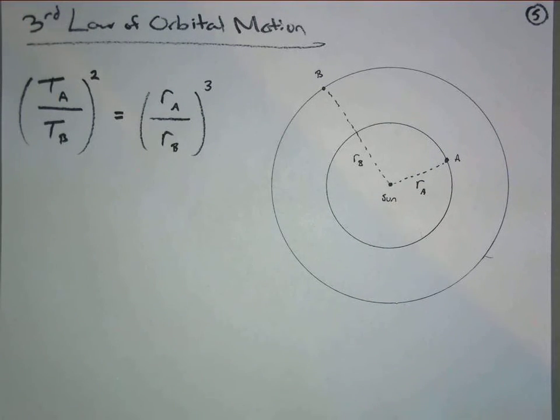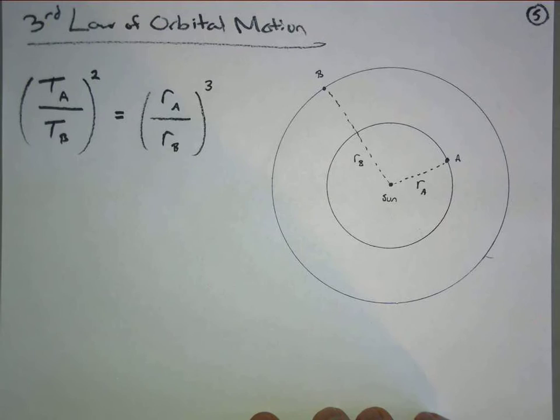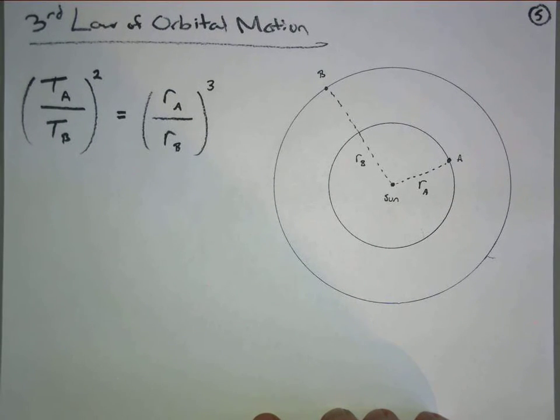of those same two planets. This is one way of looking at Kepler's third law of orbital motion. Now there's another way I want to show you because it's gonna come back to us. We're gonna kind of hate to use the phrase come full circle here, but there you go.